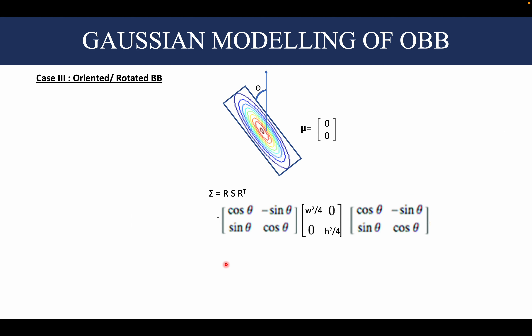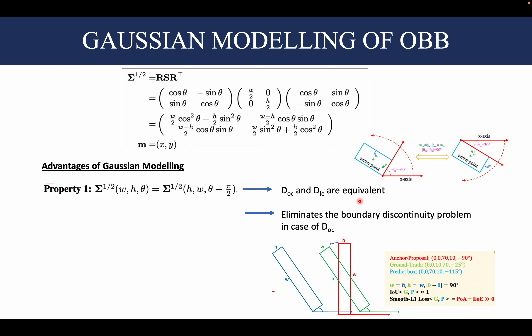Coming to the final case — the rotated or oriented bounding box. It is the same as a rectangular bounding box with a rotation angle theta added. So when we break the covariance matrix of this rotated bounding box into R S R-transpose, the only addition is this rotation matrix. We can now define any random rotated bounding box in our dataset: the mean of the 2D Gaussian approximating it is the center of the bounding box given by its x and y coordinates, and the covariance matrix is given by this equation, further simplified.